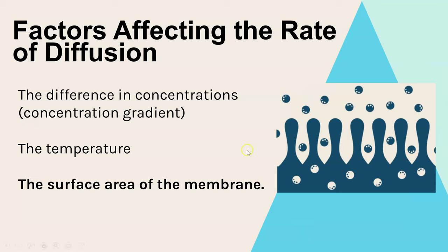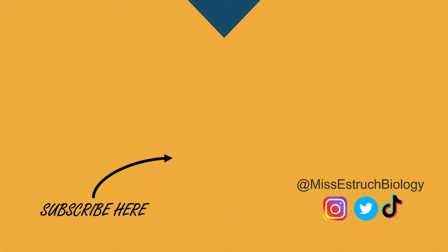Lastly is the surface area of the membrane. This only applies to diffusion across the membrane. The larger the surface that particles can diffuse across, the faster it will happen, because there's more space for those particles to move through.